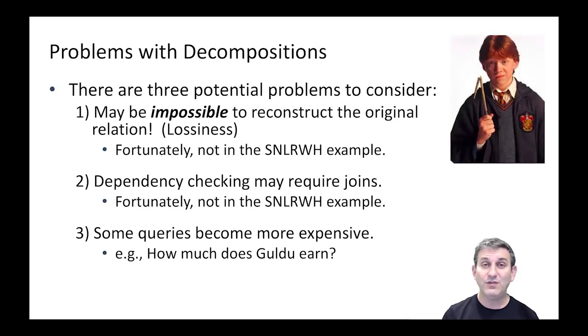The third thing is that if you decompose one table into two tables, then some queries will span those two tables and require a join. For example, if we put ratings and wage in a different table, then if we ask how much some person earns, we have to join the SNLRH table with the rating-wage table. So some queries will become more expensive, and that's inescapable when you do decompositions. There is a trade-off here between these three things and the redundancy that we're going to remove by decomposition.